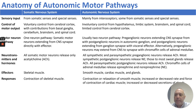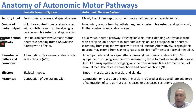To summarize: the sensory input from the somatic nervous system is from somatic senses and special senses like visual and hearing. The control of motor output is voluntary, coming from the cerebral cortex with contributions from the basal ganglia, cerebellum, brainstem, and spinal cord. The motor neuron pathway uses one neuron — the somatic motor neuron extends from the CNS directly to the effector. Neurotransmitters are acetylcholine only, and the effectors are skeletal muscles.